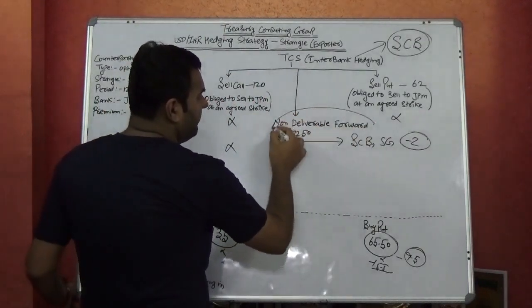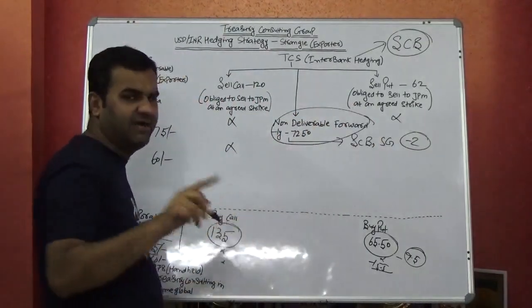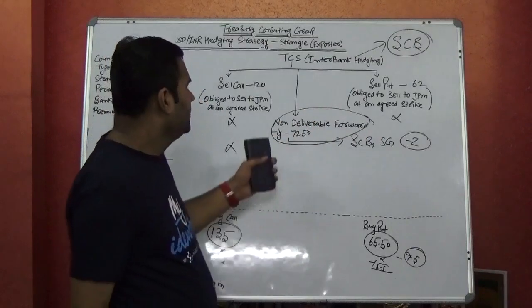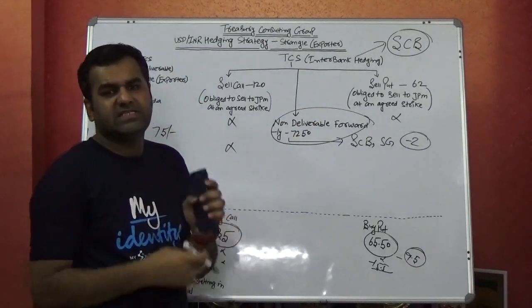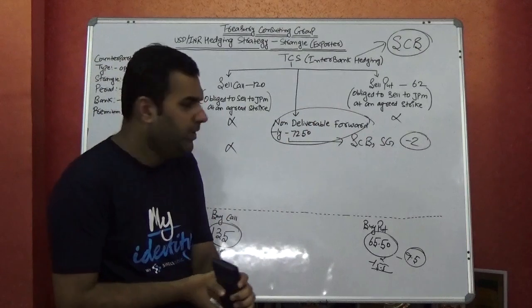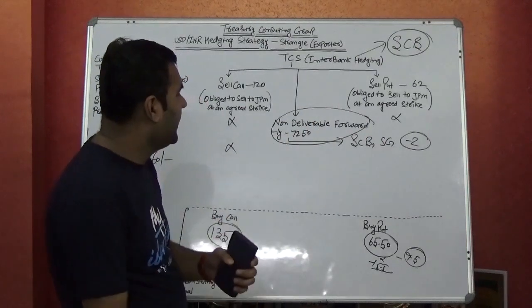Now what is this third leg? It is the non-deliverable forward with one year. Because we have assumed the option to be one year. Sitting today, USD/INR one year is at 72.5. We have taken from Reuters and Bloomberg. Now how exactly it happens.